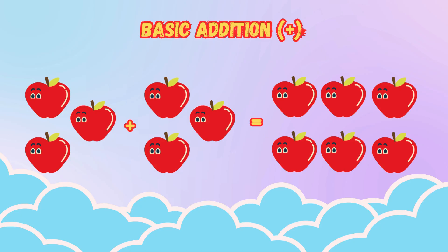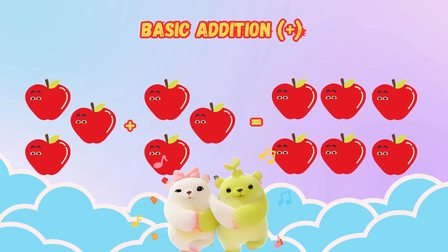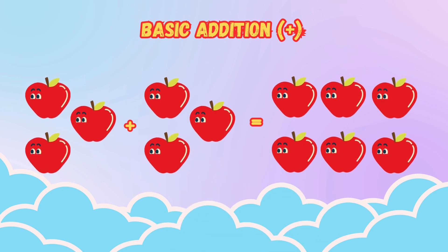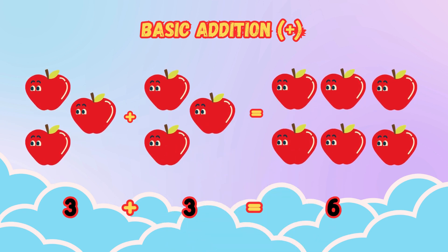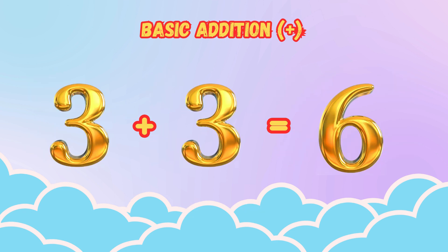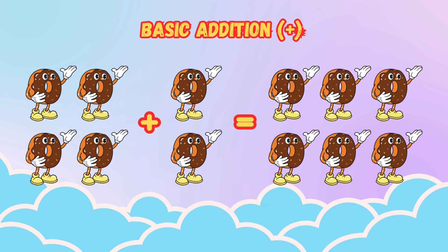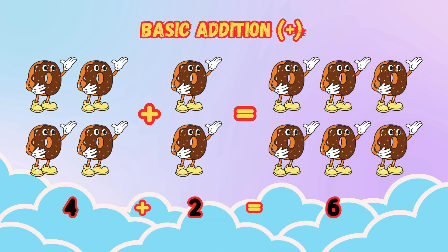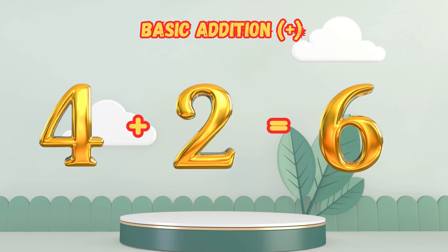Three apples plus three apples is equal to six apples — it means three plus three is equal to six. Four donuts plus two donuts is equal to six donuts. It means four plus two is equal to six.